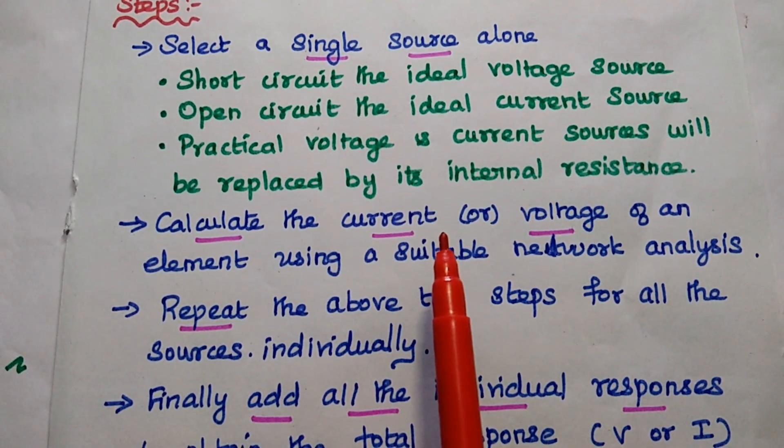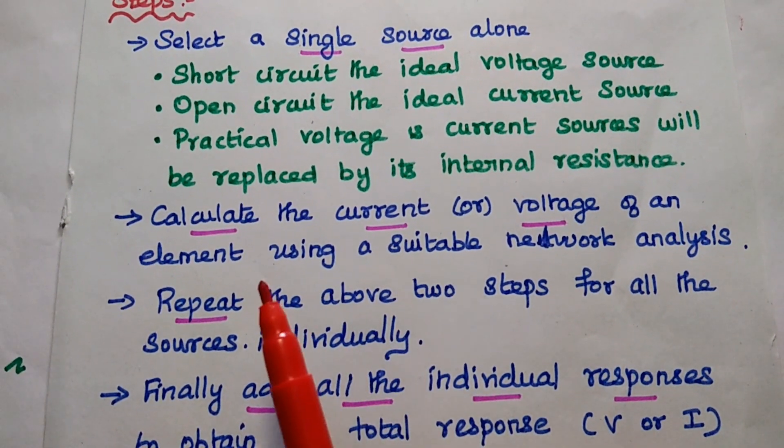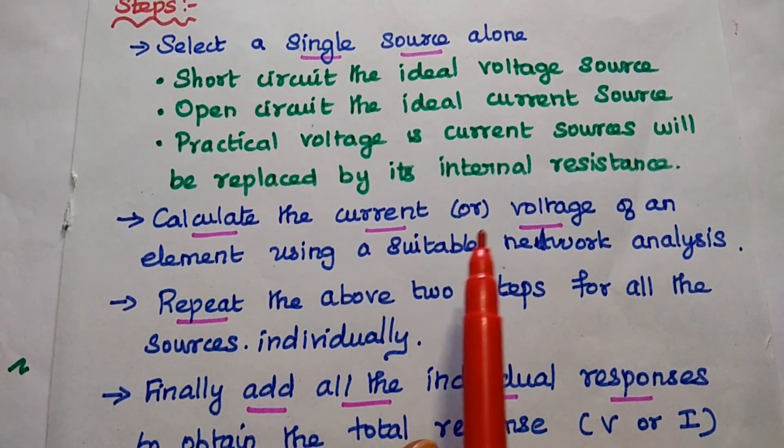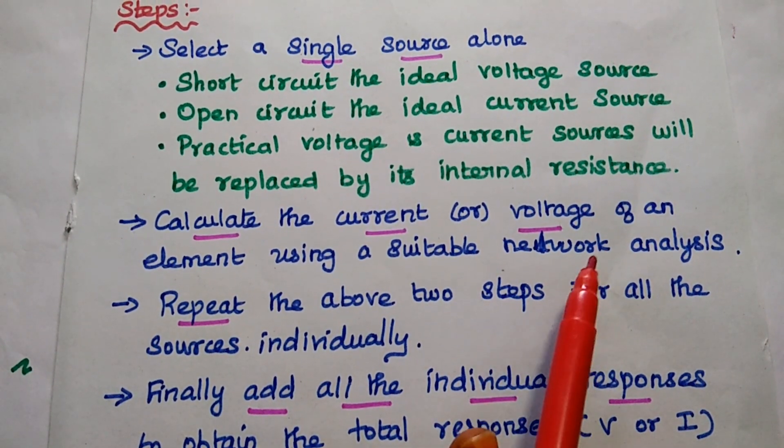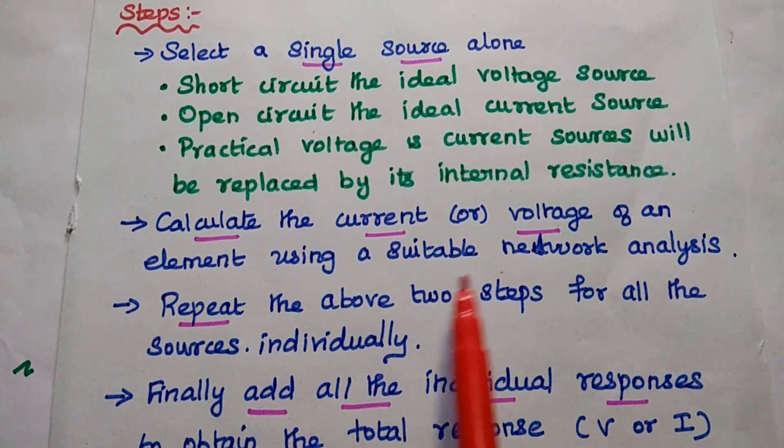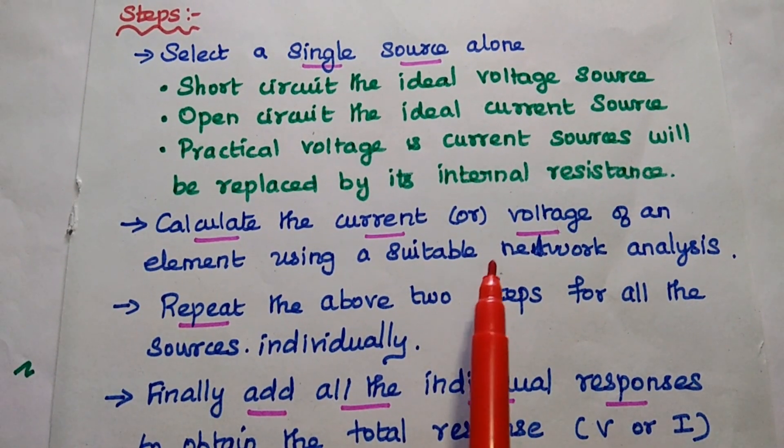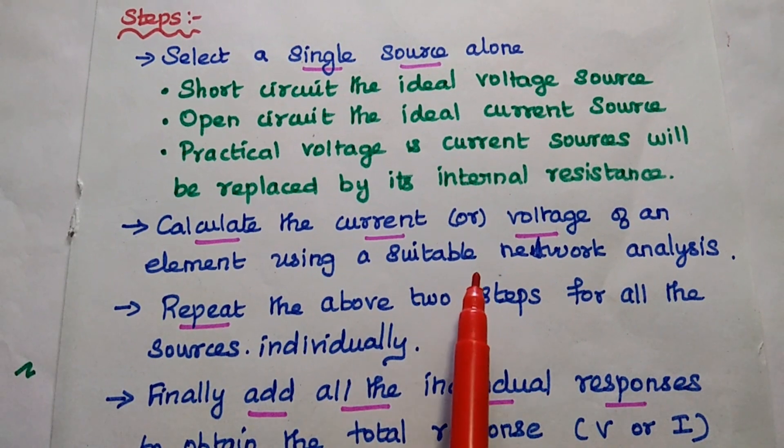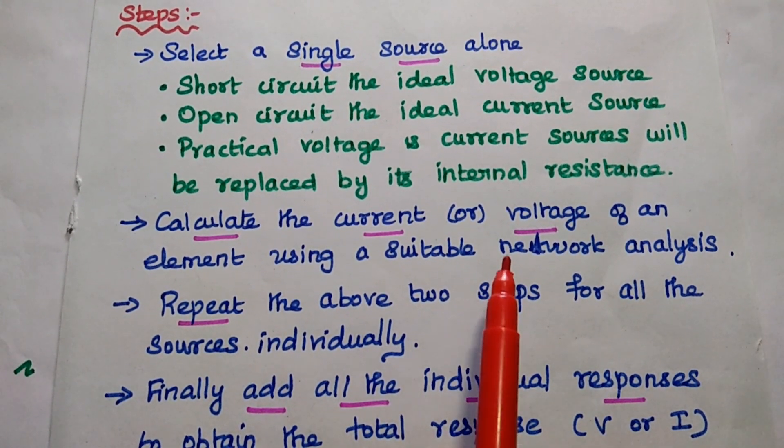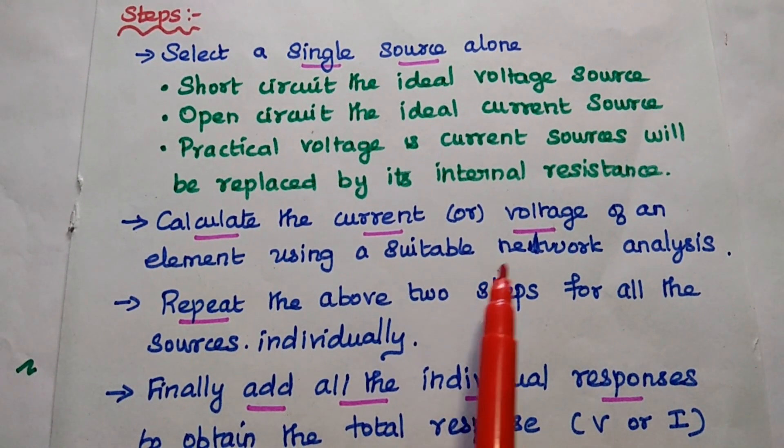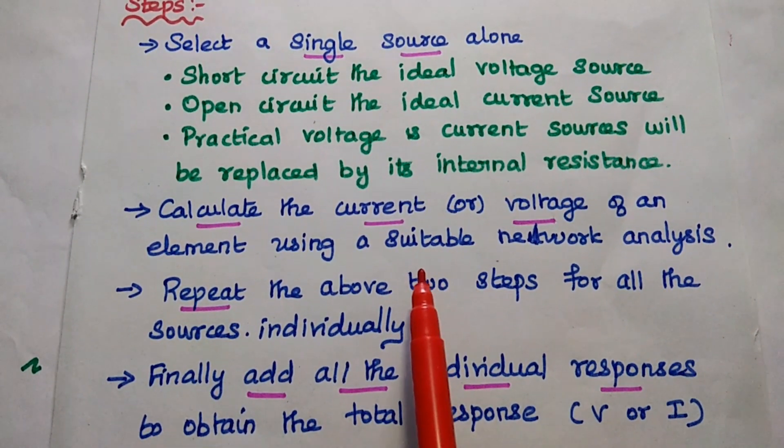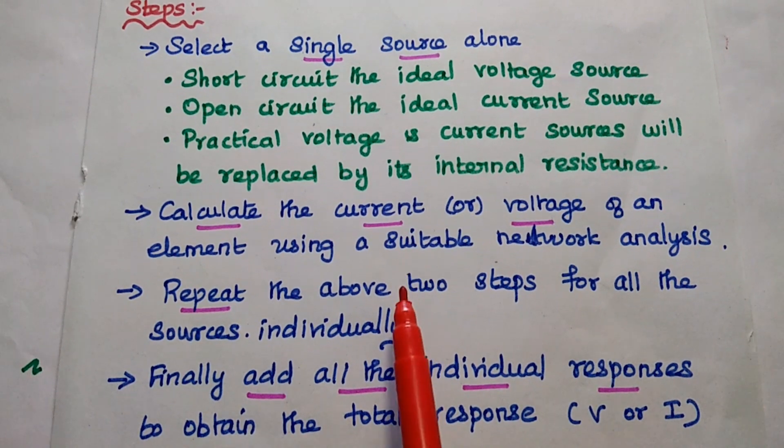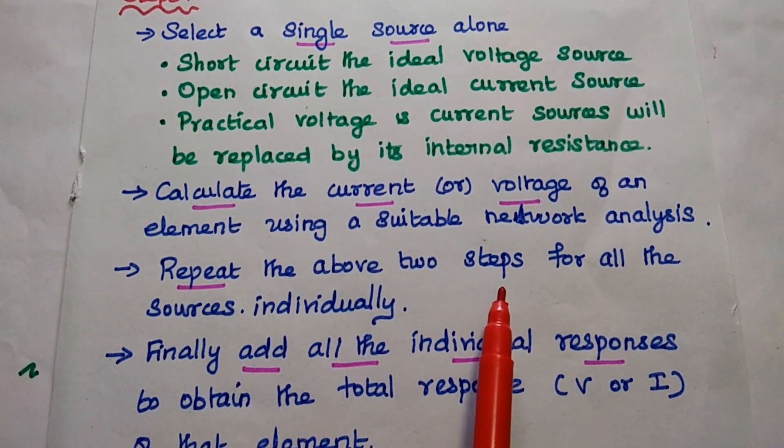So after selecting the single source, then we have to calculate the current or voltage of an element using suitable network analysis method. That means any method like Ohm's law, current division rule, voltage division rule, mesh analysis, nodal analysis methods to find out the current or voltage. So we have to repeat the above two steps for all the sources individually.